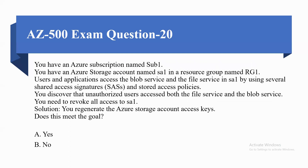Coming to the next question. You have an Azure subscription named Sub1, an Azure storage account named SA1 in resource group RG1. Users and applications access the Blob service and the File service in SA1 by using several shared access signatures and stored access policies. You discover that an unauthorized user accesses both the File service and the Blob service. You need to remove all access to SA1. The solution provided is: you regenerate the Azure storage account access keys. Does this solution meet the goal? The correct answer is Yes.